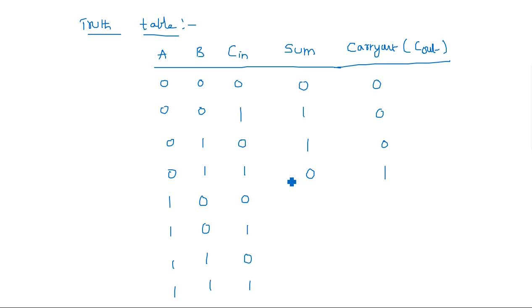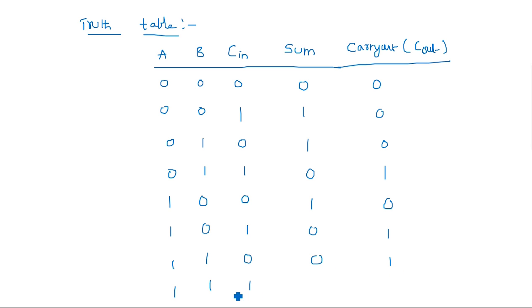For 0+1+1: Sum=0, Carry=1 — when adding two logic 1s in binary addition that gives Sum=0, Carry=1. For 1+0+0: Sum=1, Carry=0. For 1+0+1: Sum=0, Carry=1. For 1+1+0: Sum=0, Carry=1. For 1+1+1: Sum=1, Carry=1.